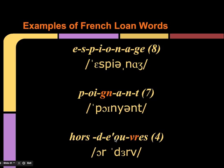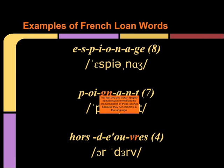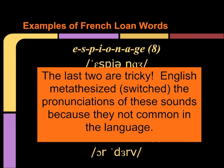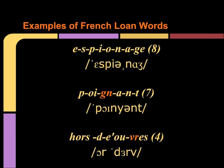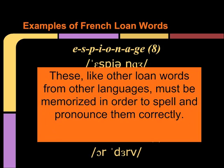Mostly because these sounds probably did not exist in English, English made some changes. For example, with the G and the N, that is actually represented here by the NY combination, though the pronunciation is different in French — English basically switched the two because it didn't seem to be as common in terms of pronunciation. In the final word — a very long word with only four sounds — the first part is represented only by a single phoneme. The problem is that in French, the ER sound is supposed to come after the V, but English put it before, because this combination is not very common in English. These are words taken directly from French, but English had to accommodate its pronunciation somewhat. Like other loan words from Latin and Greek, these words often have to be memorized in order to spell and pronounce them correctly.